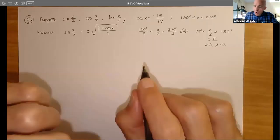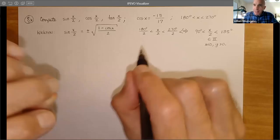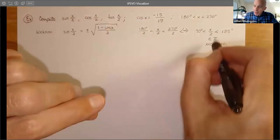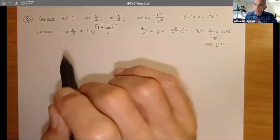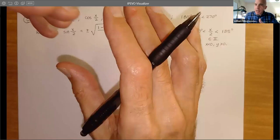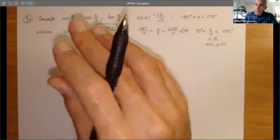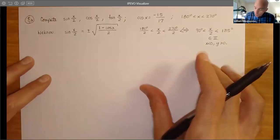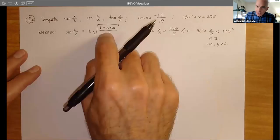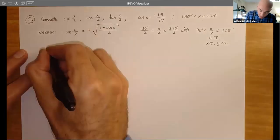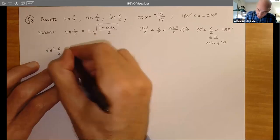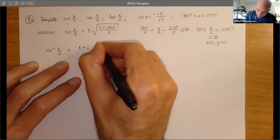The interesting part about these problems is that when you set them up, they have to be consistent. You know you have a messed-up problem when you do the arithmetic and there's an inconsistency. So that means we're going to take the positive for the sine. But the key here is we just want to use this formula squared — forget the radicals for now. So sine²(x/2) = (1 - (-15/17))/2.